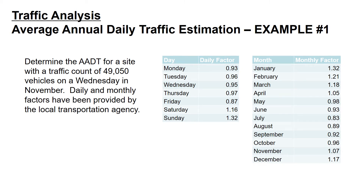As an example, we're asked to determine the AADT for a site with a traffic count of 49,050 vehicles on a Wednesday in November. Daily and monthly factors have been provided by the local transportation agency. Before we begin working this example problem, let's look at the tables of information for the daily and monthly factors.